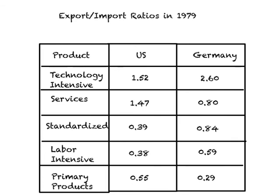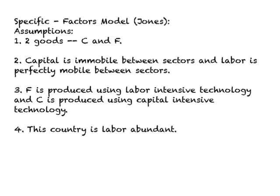This concludes our discussion of the HOS model. Recall that in the HOS model, factors of production are assumed to be perfectly mobile across sectors within a country. Several economists criticized this, noting that machines used in the food industry cannot be used in the clothing industry. To address this, an economist by the name of Ron Jones developed what is called the specific factors model, assuming two goods — clothing and food — with labor perfectly mobile between sectors but capital completely specific to, and immobile between, sectors.